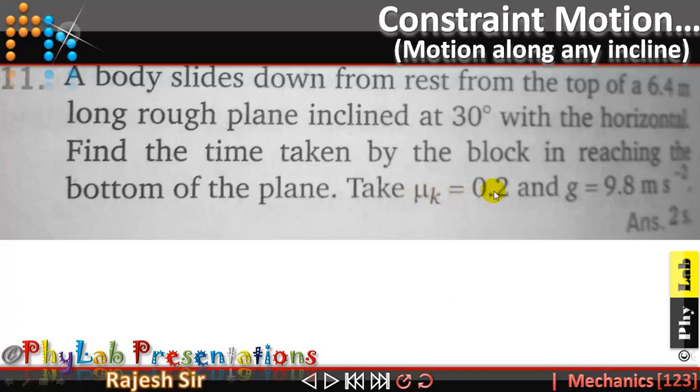The constants given as coefficient of dynamic friction as 0.2 and acceleration due to gravity as 9.8 meter per second square. So let's see how to solve this particular problem.